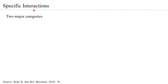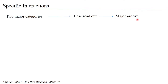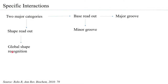Now let us move to specific interactions. There are two major categories: base readout, where the protein reads the sequence of base pairs in the DNA, and shape readout, where the protein reads the conformation of the DNA. Base readout is subdivided into reading through the major groove and reading through the minor groove. Shape readout is further divided into global shape recognition — where the entire DNA is bent — and local shape recognition — where only one specific position of the DNA is bent.